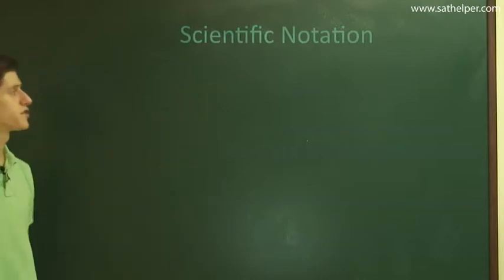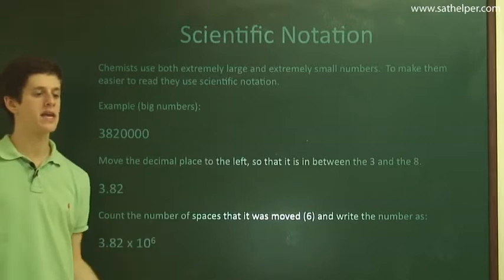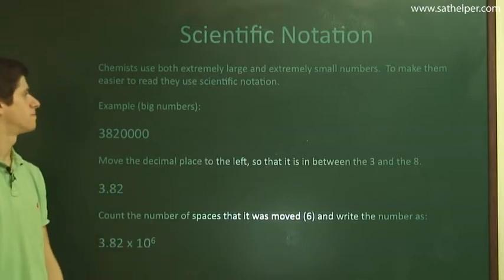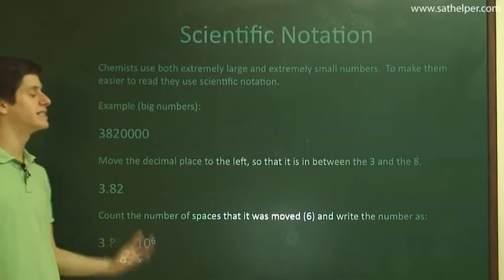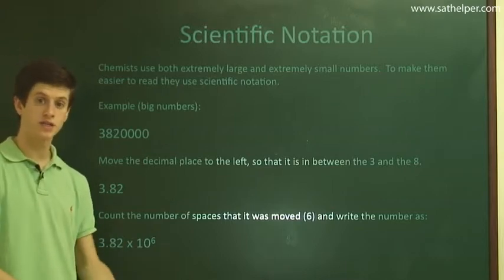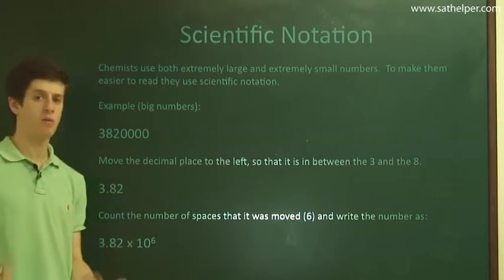So the answer to that is scientific notation. Scientific notation is a way of representing extremely large and extremely small numbers. What it does is makes them easy to talk about, both to perform mathematical operations on them and just to talk about and get a sense for how big or small something is.